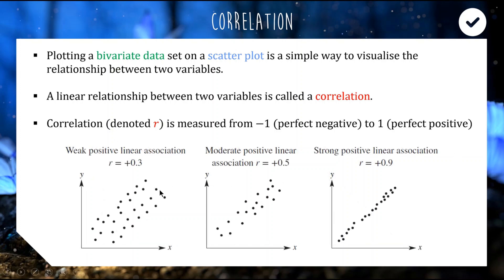A scatter plot with about r equals 0.3 — it is positive, just weak, because the points are very spread out and not forming a very straight line.